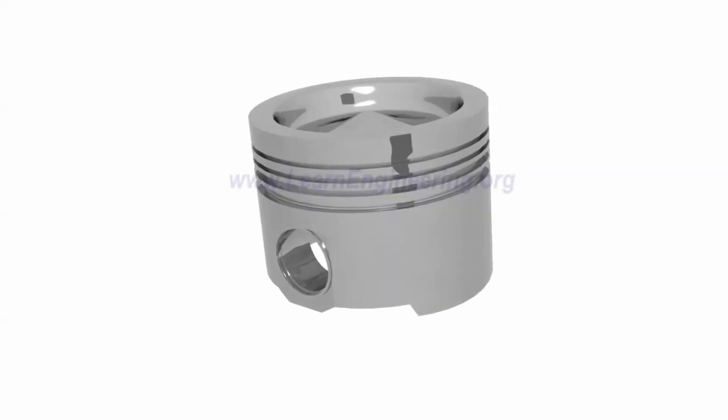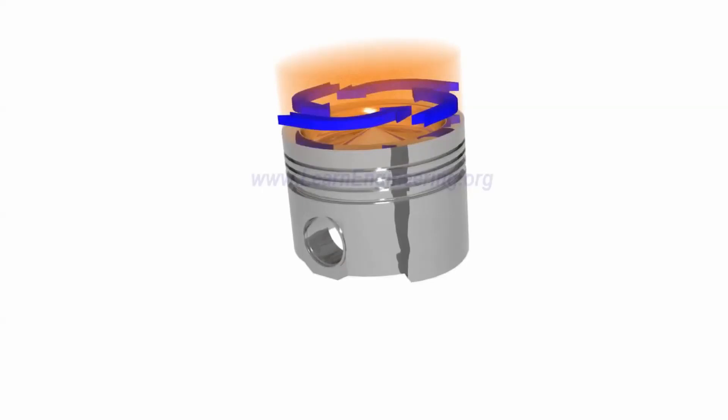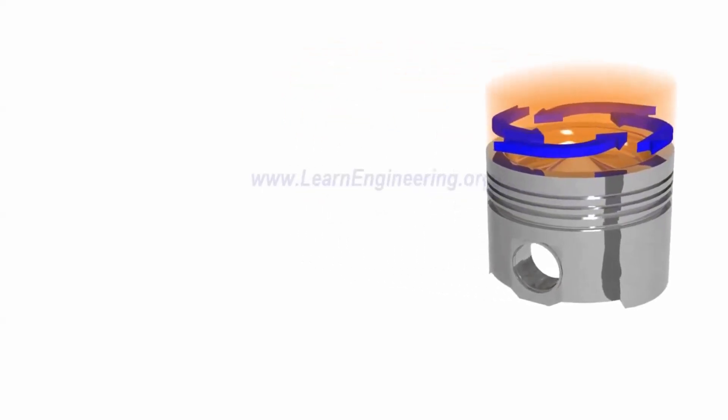You may have noticed that a bowl is provided on top of the diesel engine piston. During the compression stroke, this bowl helps produce air that is rapidly swirling. Thus, the injected fuel gets mixed with the air effectively.